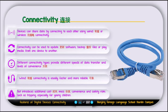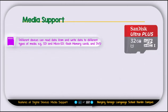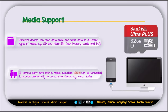The next feature is media support. Different devices can read data from and write data to different types of media, such as SD cards, micro SD cards, flash memory cards, and DVDs. Writing data means, for example, copying a song to a USB drive. Reading data means playing something from a USB or storage media. If a device does not have built-in media support, media adapters like a card reader can be connected to provide connectivity to external devices.